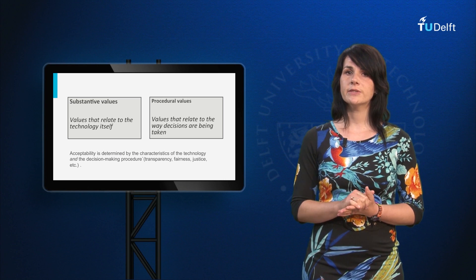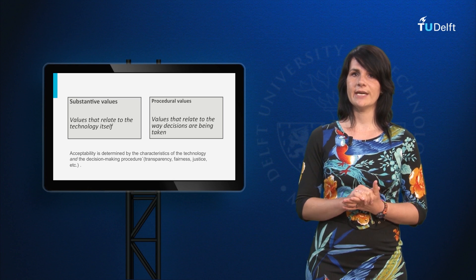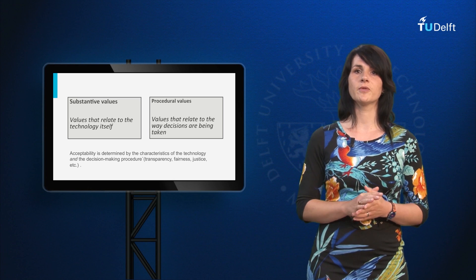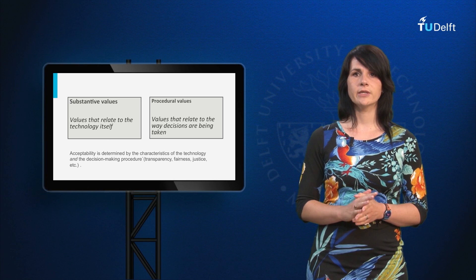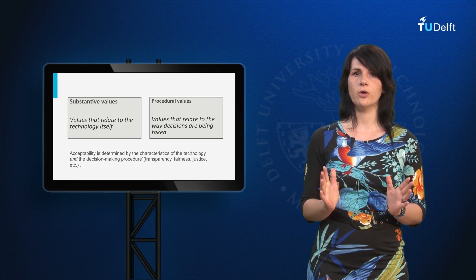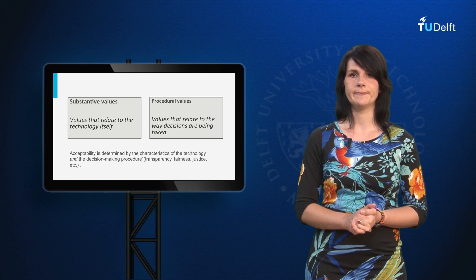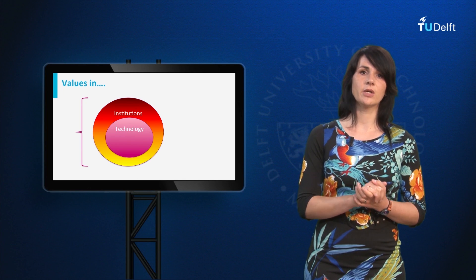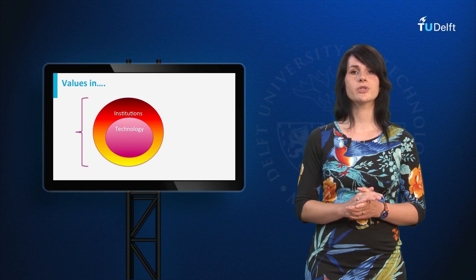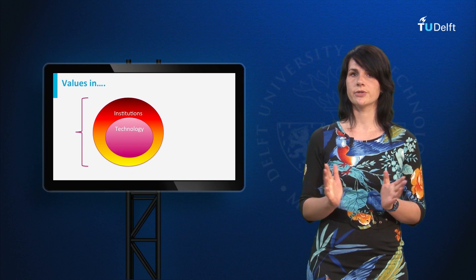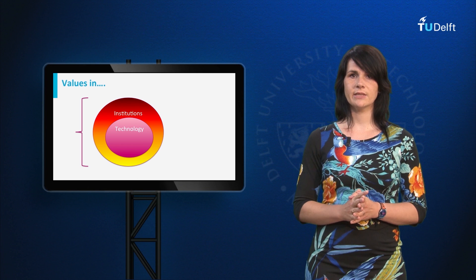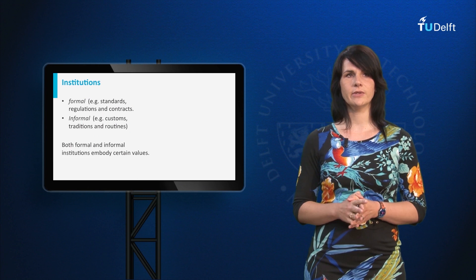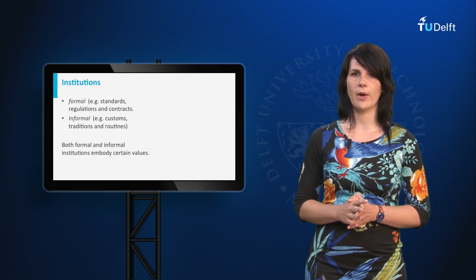The importance of procedural values suggests that value-sensitive design for responsible innovation requires a broader scope than design of technology alone. Values are not only present in technology but also in institutions; therefore it makes sense to extend the scope beyond technology and include institutions as well.